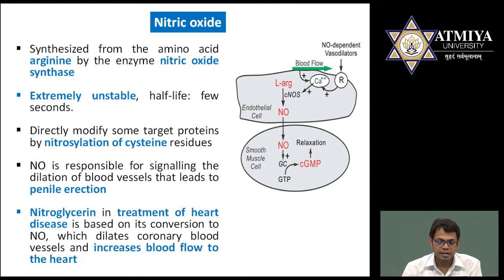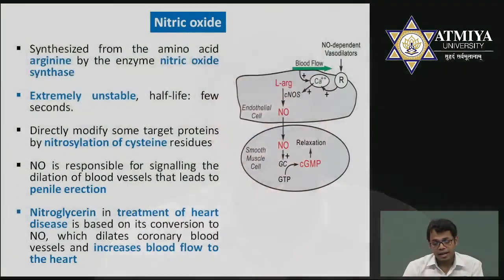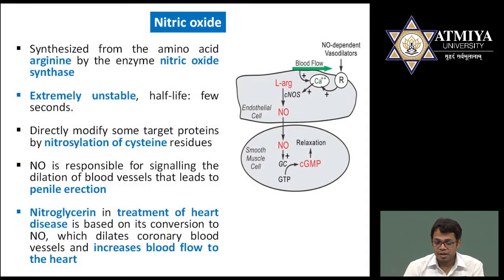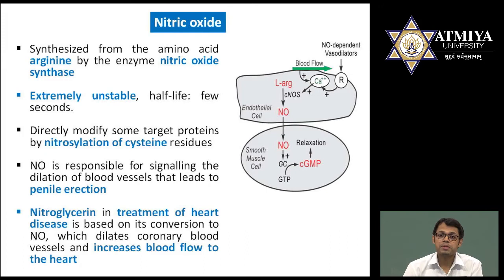This relaxation relates to muscle relaxation and blood vessel dilation. For example, nitric oxide is responsible for signaling the dilation of blood vessels that leads to penile erection — erection of the penis is directly related to nitric oxide production. Regarding nitroglycerin as treatment for heart disease: it works through conversion to nitric oxide, which dilates coronary blood vessels and increases blood flow, reducing the chances of heart attack.